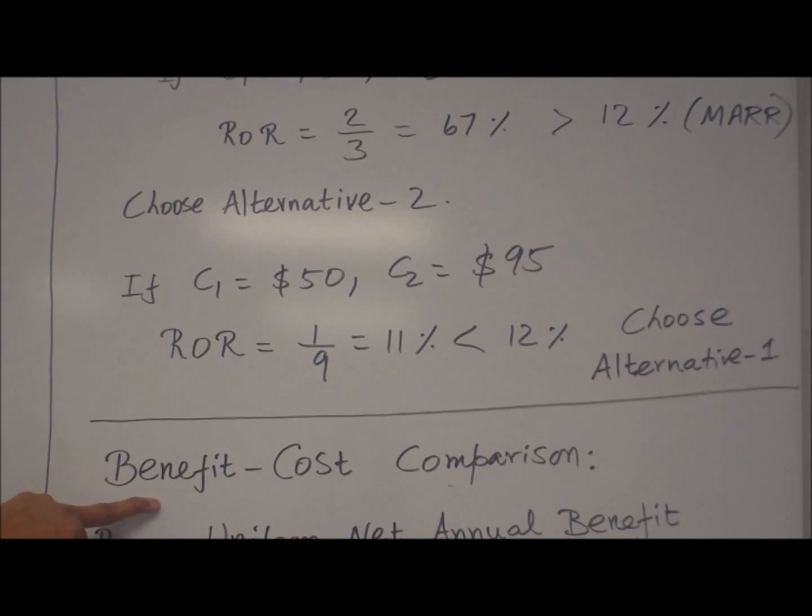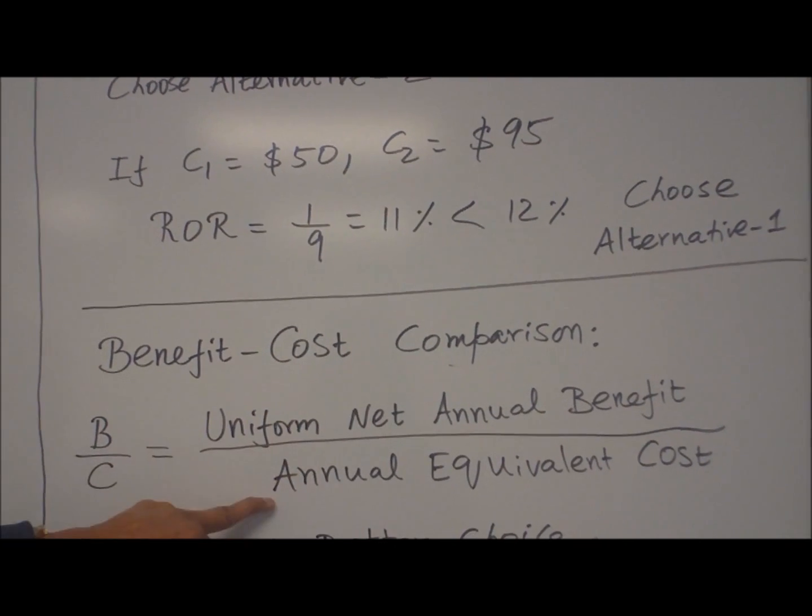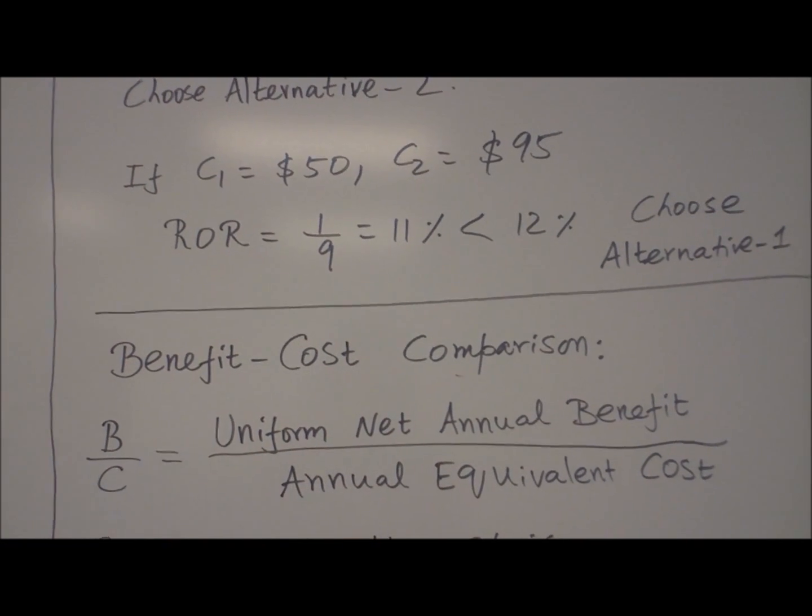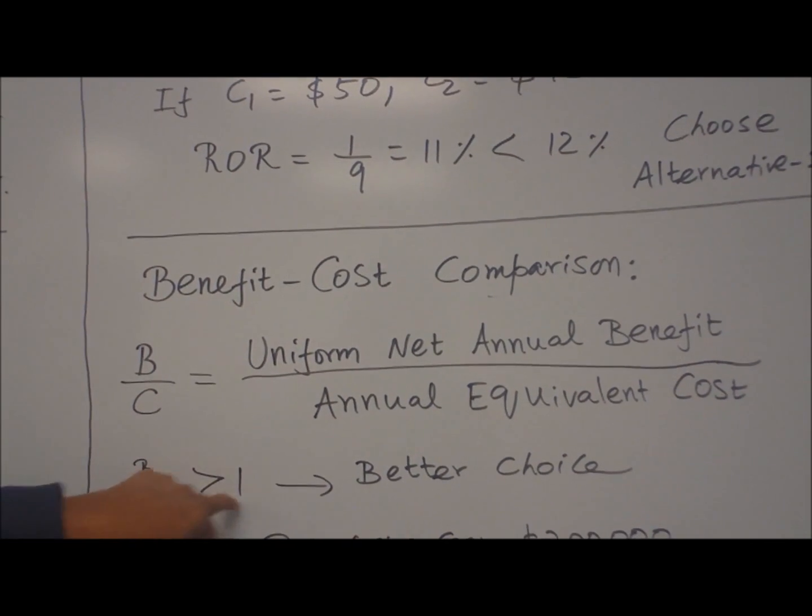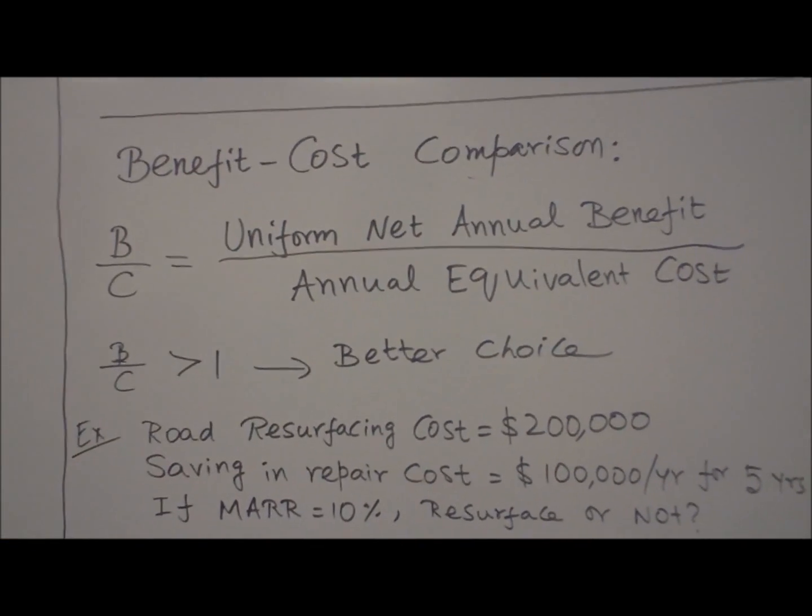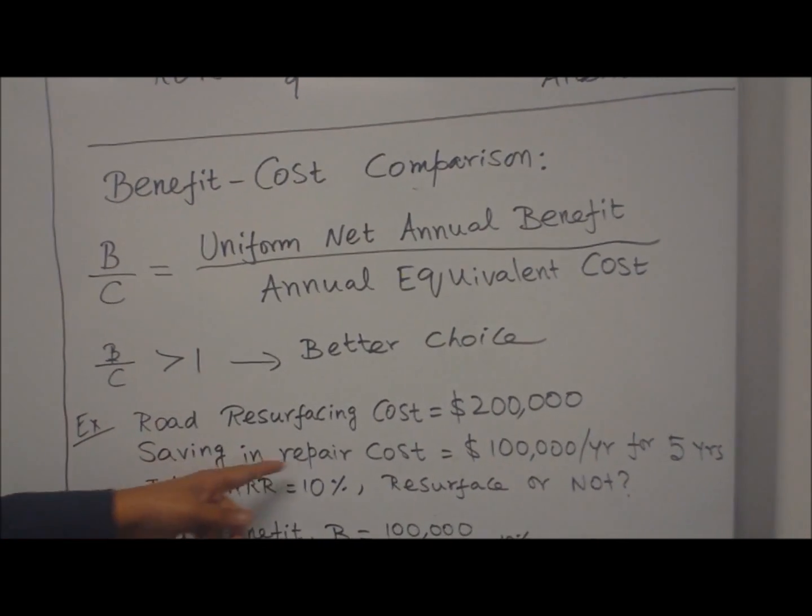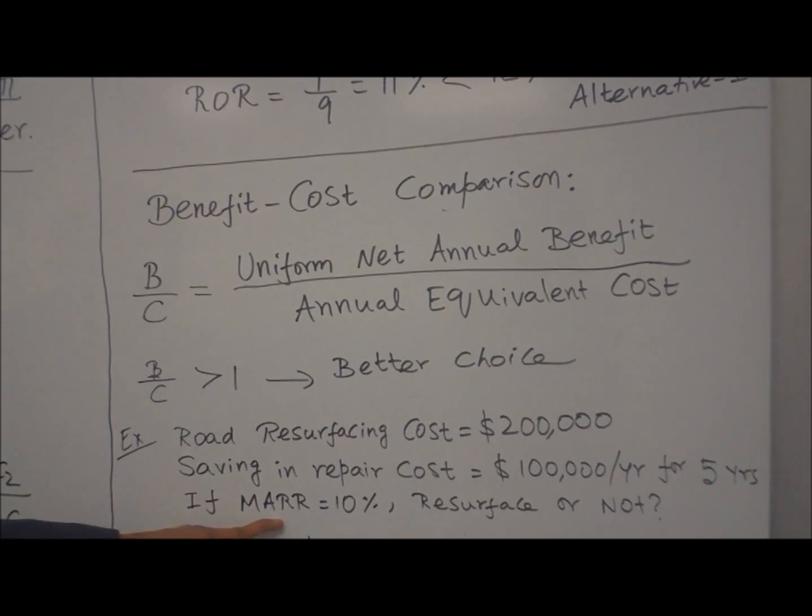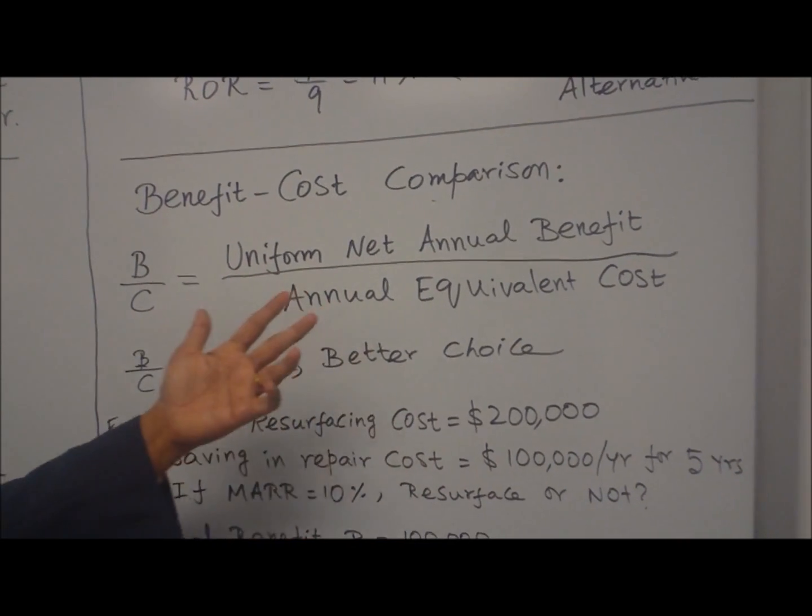Another comparison: benefit-cost comparison. B/C is given by uniform net annual benefit divided by annual equivalent cost. In other words, annual benefit by annual cost. If B/C greater than 1, obviously it's more benefit than the cost, so better choice. For example, let us say you're resurfacing the road that costs $200,000. By doing that, you save in repair costs $100,000 per year for 5 years. If the minimum acceptable rate of return is 10%, or interest rate 10%, whether to resurface or not.